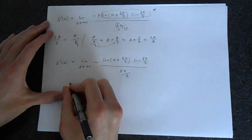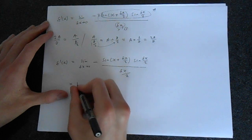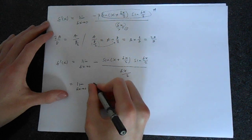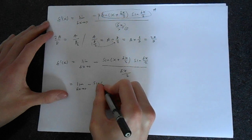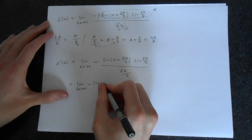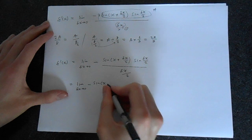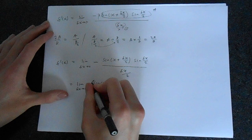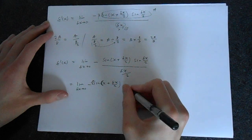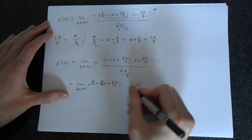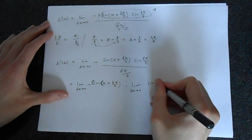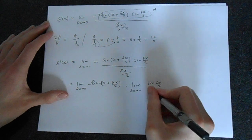We can split this so we can basically say this is the same as the limit delta x goes to 0 of minus sine of x plus delta x over 2, brackets in here, times the limit of delta x goes to 0 of sine delta x over 2.